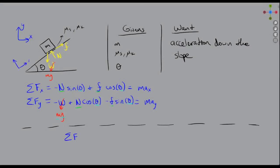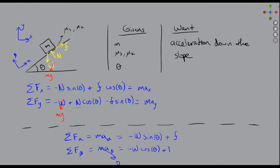A simpler option is to define new directions alpha and beta. The sum of forces tells us m times a_beta is zero, and we can recalculate: mass times acceleration in alpha equals minus w sine of theta plus the friction force, and forces in beta equals minus w cosine of theta plus n. This can make it a little easier to solve.